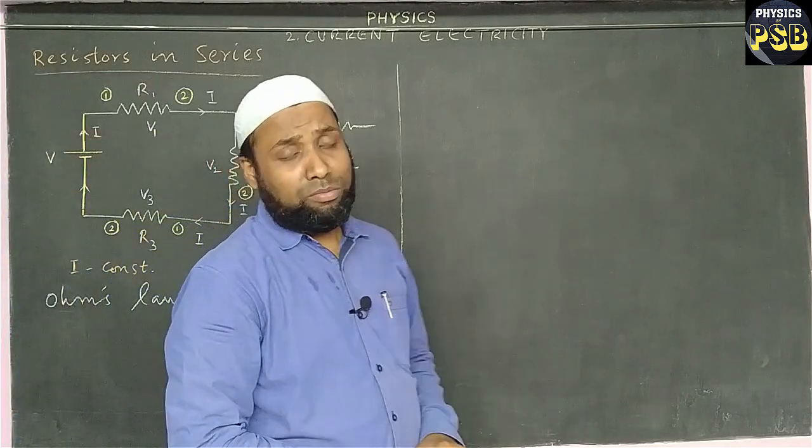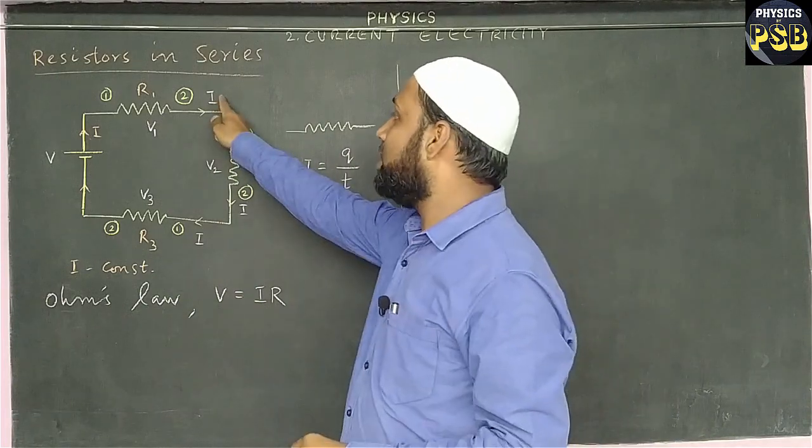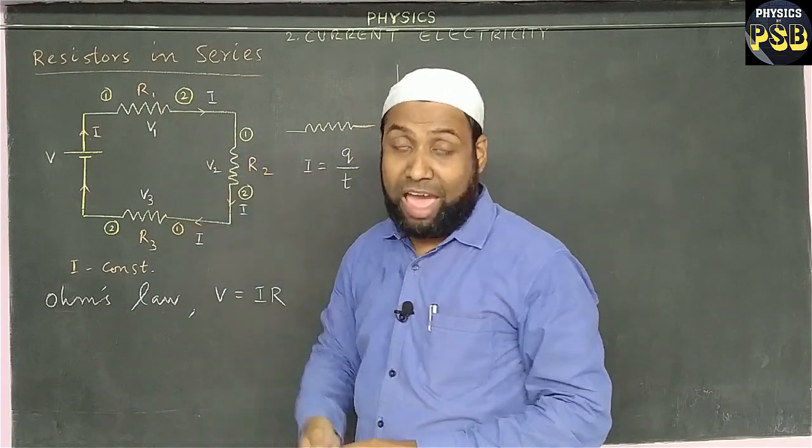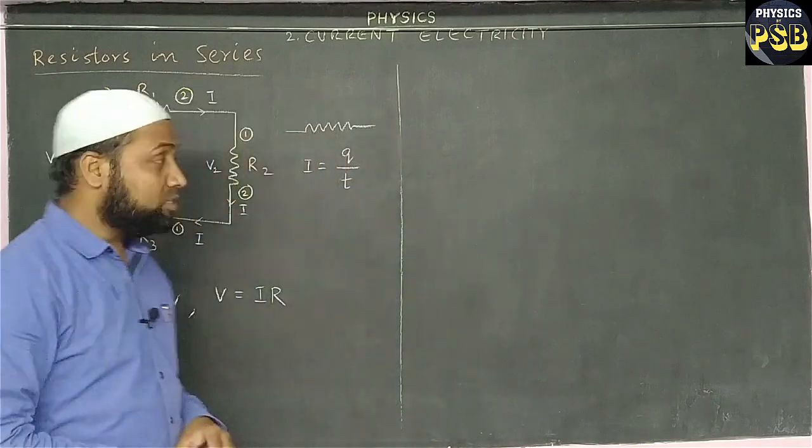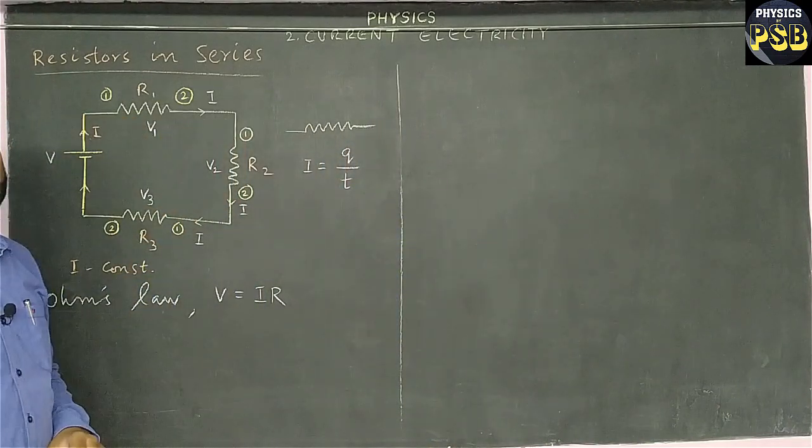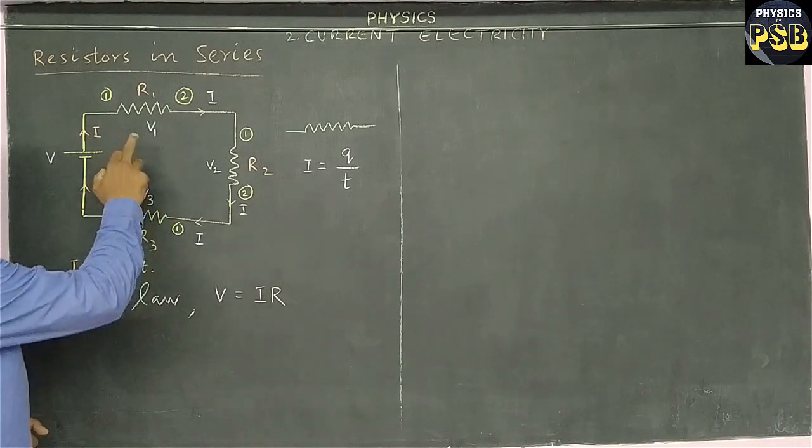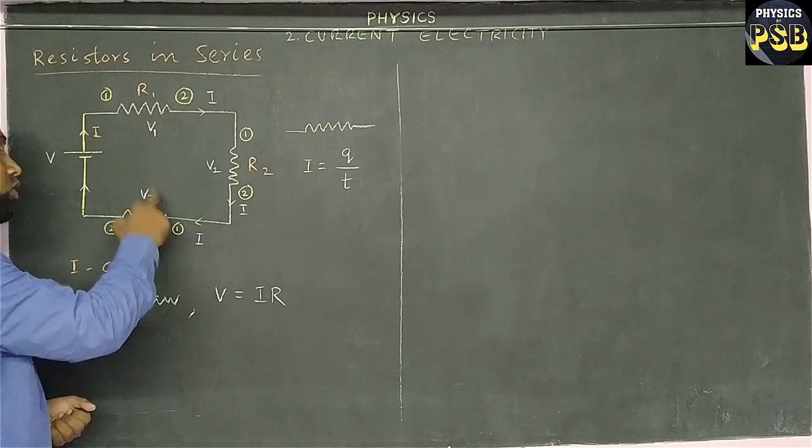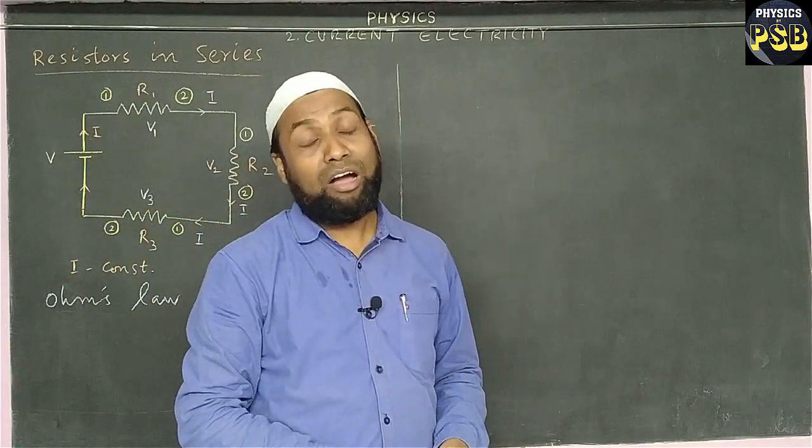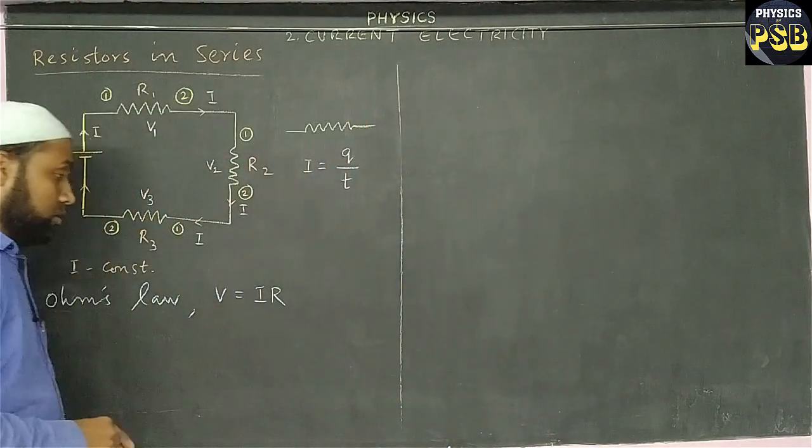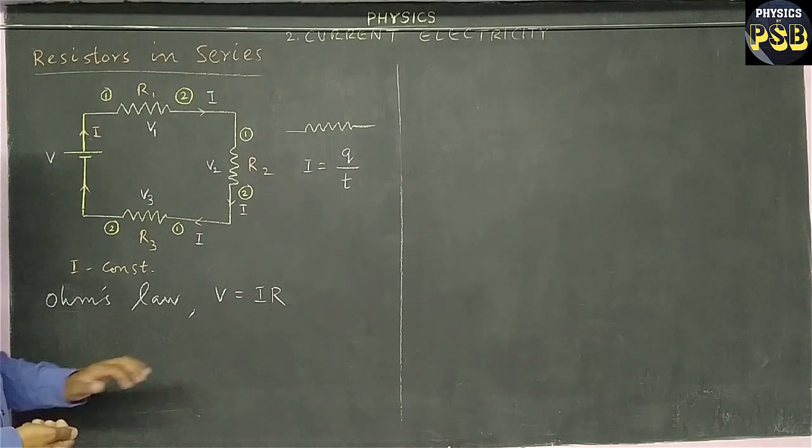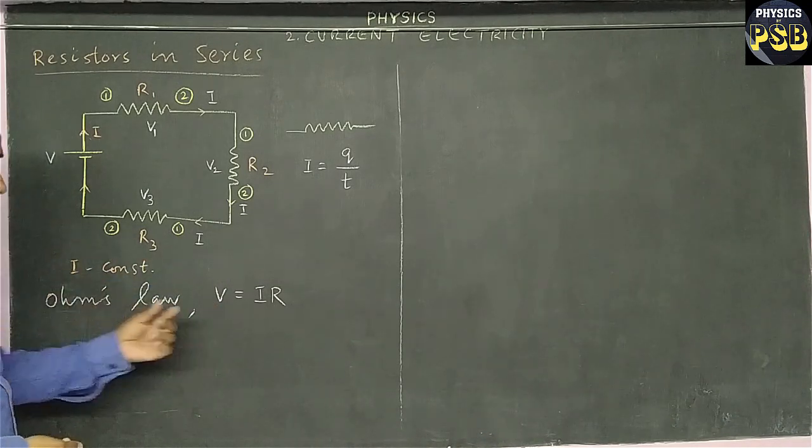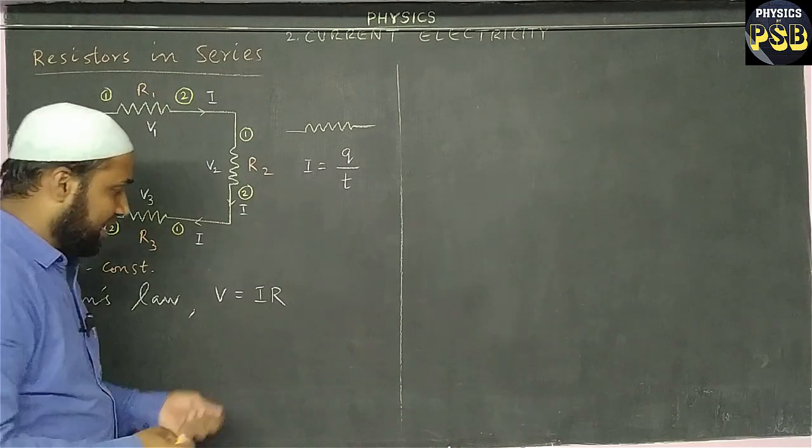We know when the same current flows through different resistors of different values, the voltage across these resistors will not be the same. The voltage across R1 is V1, the voltage across R2 is V2, and the voltage across R3 is V3.